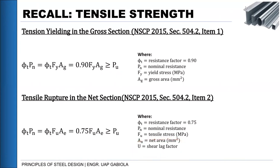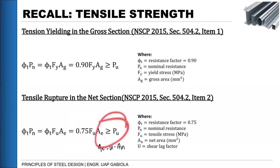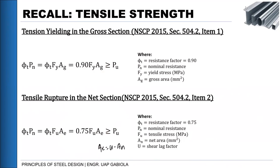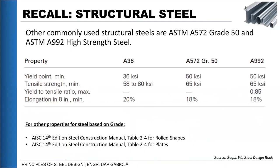We already discussed the concept of the shear lag factor, so we can calculate the effective net area Ae, which equals the shear lag factor U times the net area An. This expression must also be greater than our load combination demand. For LRFD, we use 0.9 for gross section yielding and 0.75 for net section rupture. For ASD, we divide by 1.67 for gross section yielding and by 2.0 for net section rupture.